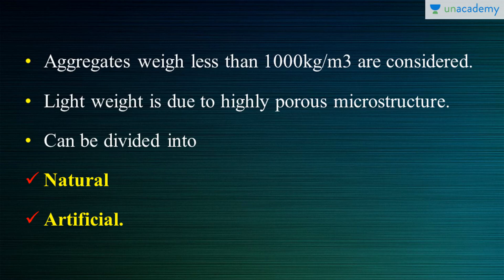First and foremost, we are talking about coarse aggregates here. Coarse aggregates are one of the most important and fundamental ingredients in a concrete matrix. I have done a detailed course based on coarse aggregates in my profile — you can check over there. Aggregate choice plays a vital role here. The aggregates used are those that weigh less than 1000 kilograms per meter cube, and these are considered for lightweight concrete.